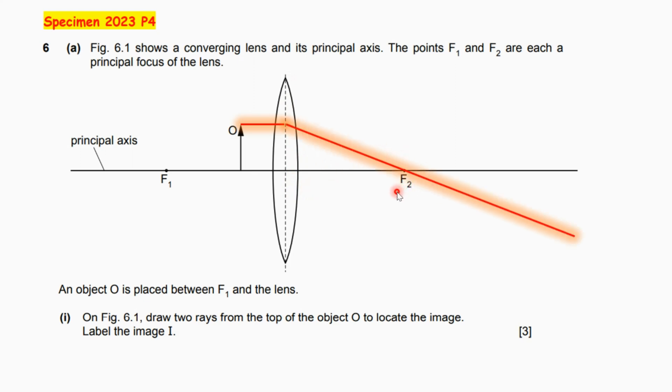Secondly, we draw another ray that passes through the center, and this one does not refract. It passes along, there's no refraction at all.